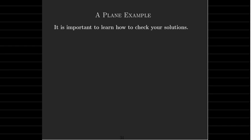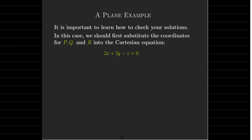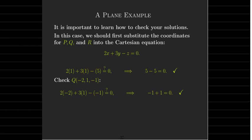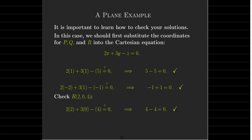We found our Cartesian equation for the plane passing through those three points. To check our solution, we substitute the coordinates of each point into the Cartesian equation and verify we get zero on the left. For point P: 2 plus 3 minus 5 equals 0. For point Q with coordinates (negative 2, 1, negative 1): negative 4 plus 3 plus 1 equals 0. For point R with coordinates (2, 0, 4): 4 minus 4 equals 0. All checks pass.